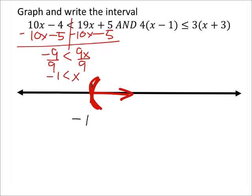On the other side of this, we've got to distribute this 4 and the 3. We'll do it one at a time, though. So I've got 4 times x is 4x minus 4 times 1 is 4. This is less than or equal to 3 times x is 3x plus 3 times 3 is 9.